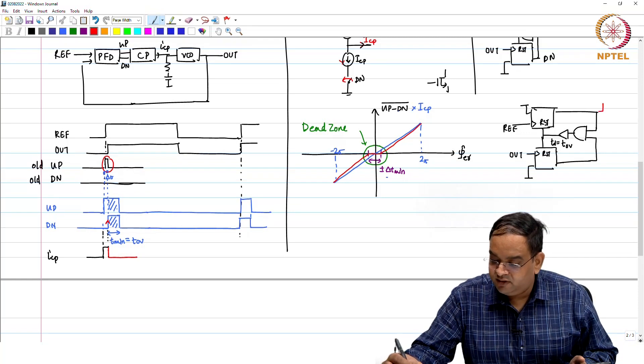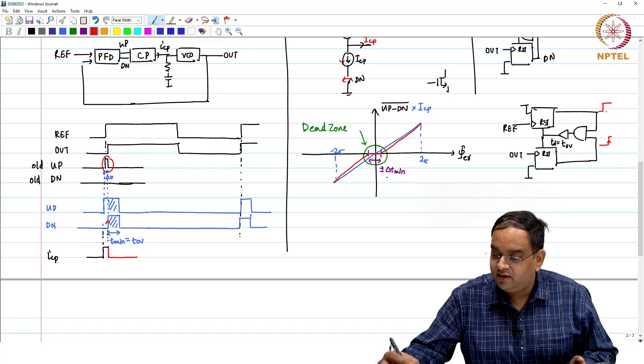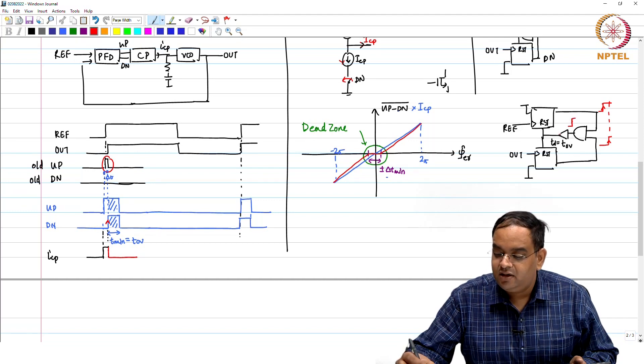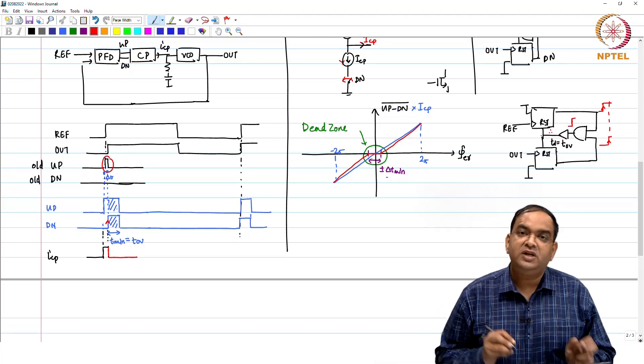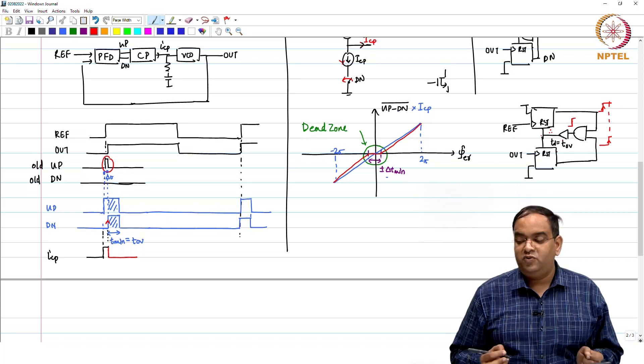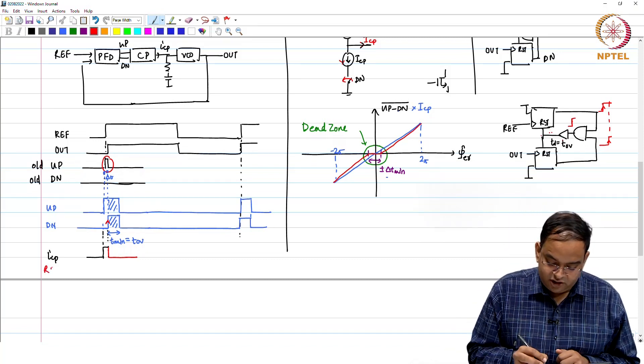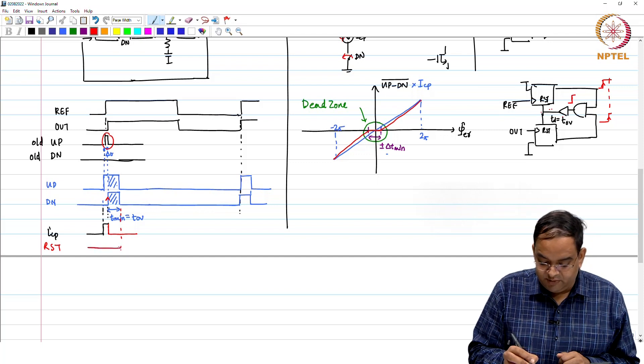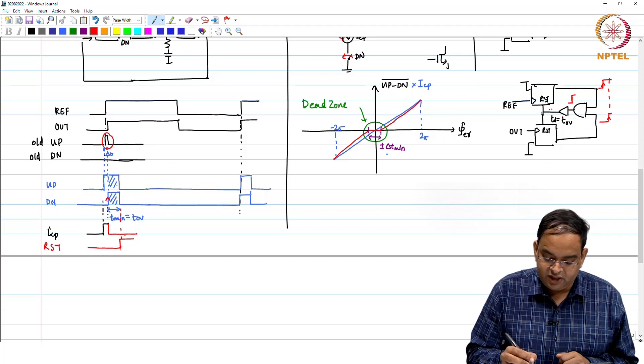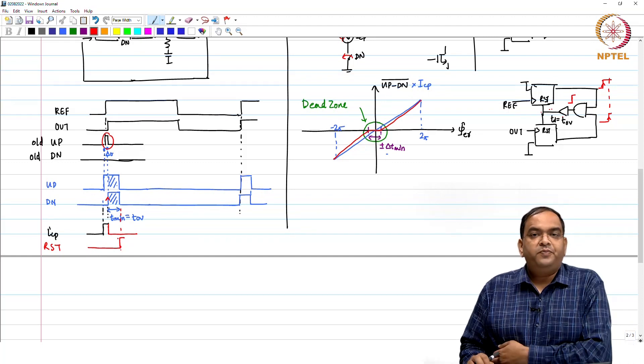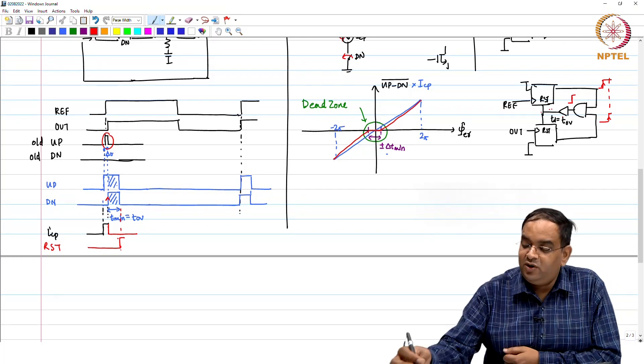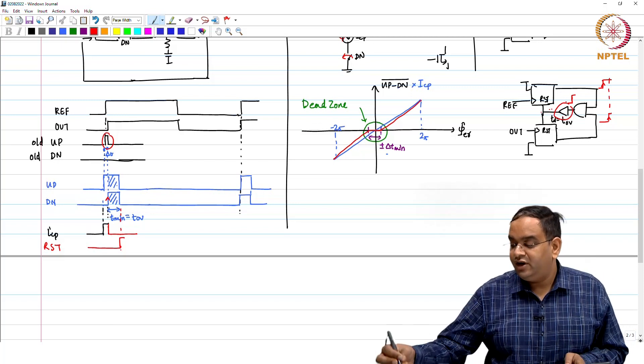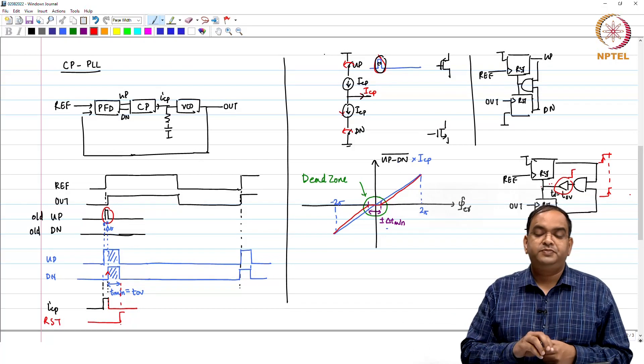When NAND output goes high, because of the delay here, the reset pulse is delayed. When reset pulse comes, ideally the reset is coming at this node. As soon as reset goes high, your pulse, your outputs will go low. You delay the reset such that this happens and how you can do that? By introducing a delay in the feedback path. In this way, you can get rid of the dead zone problem in the charge pump. Thank you.